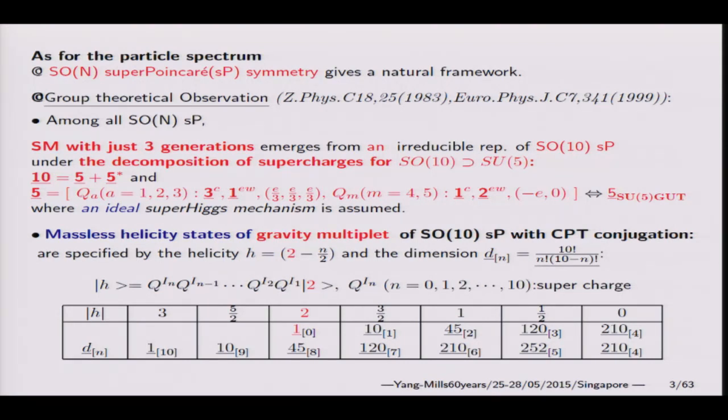The fundamental SO(10) has 10 spinor charges. By using this assignment, I can construct the full helicity tower state of the SO(10) superpoincaré. This is the result: gravity here, spin 3/2, the adjoint 2045, then spin 1/2 including three supercharges, up to helicity 3.